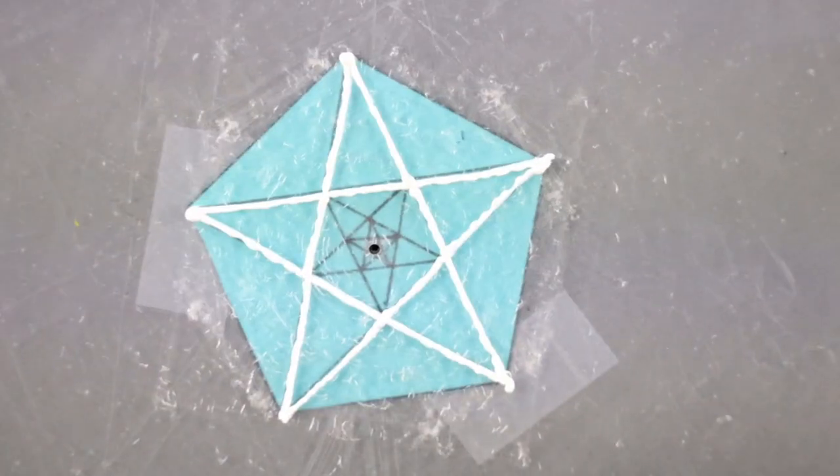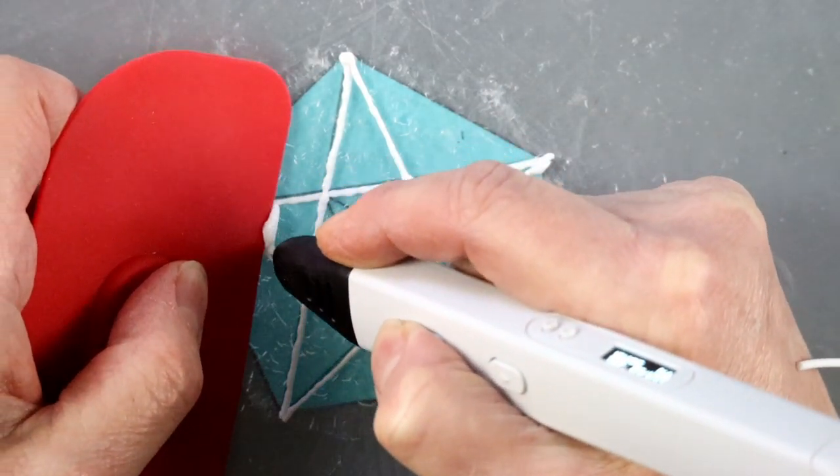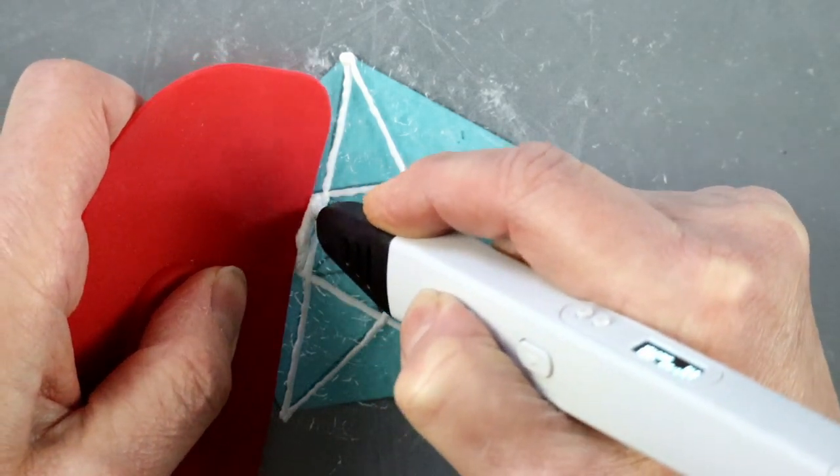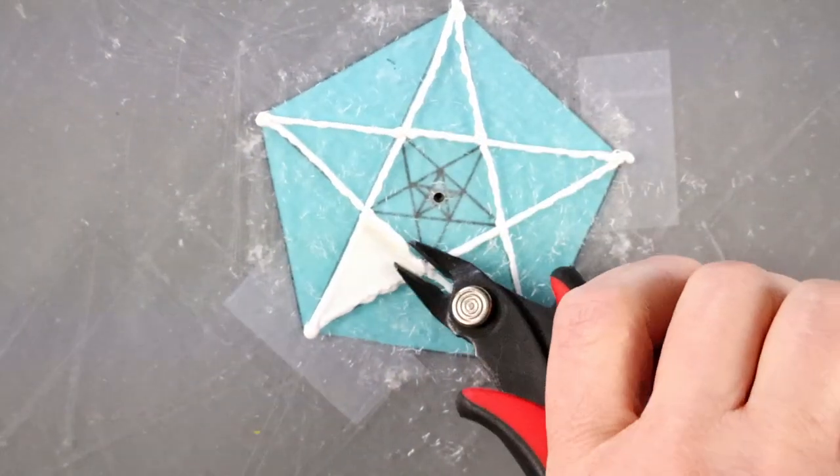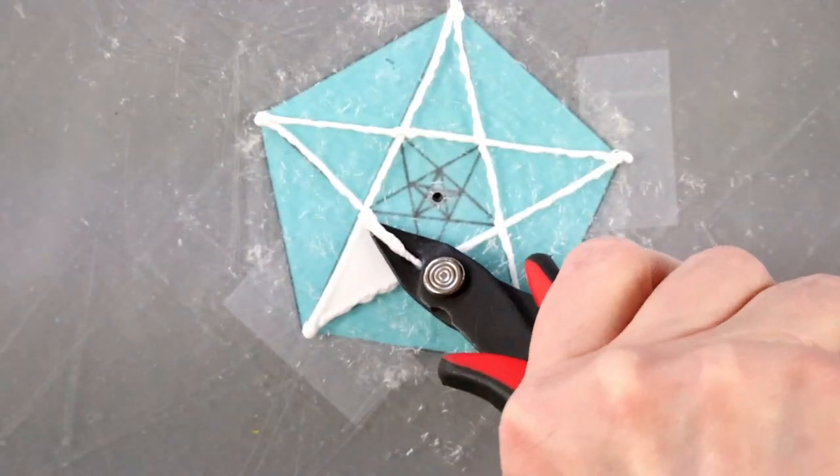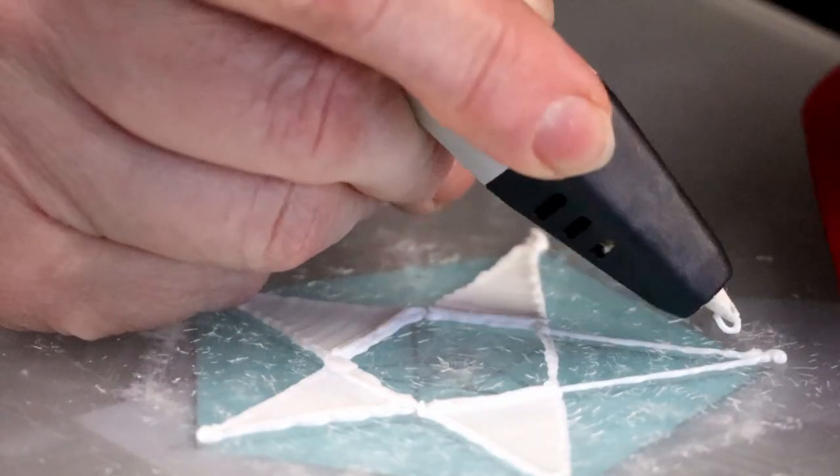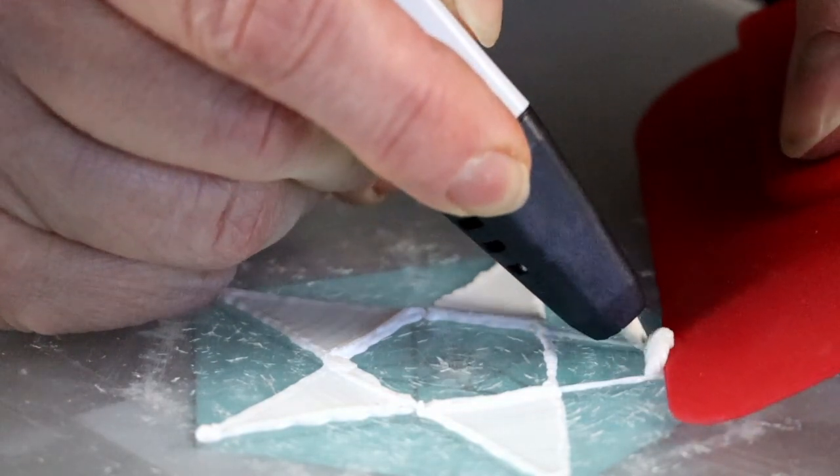To make this structure a bit stronger, I will fill in the star points with some instant smoothing fill. If you missed the instant smoothing video, the link is in the description. Filling smoothly small shapes like these is what this technique is particularly good at.